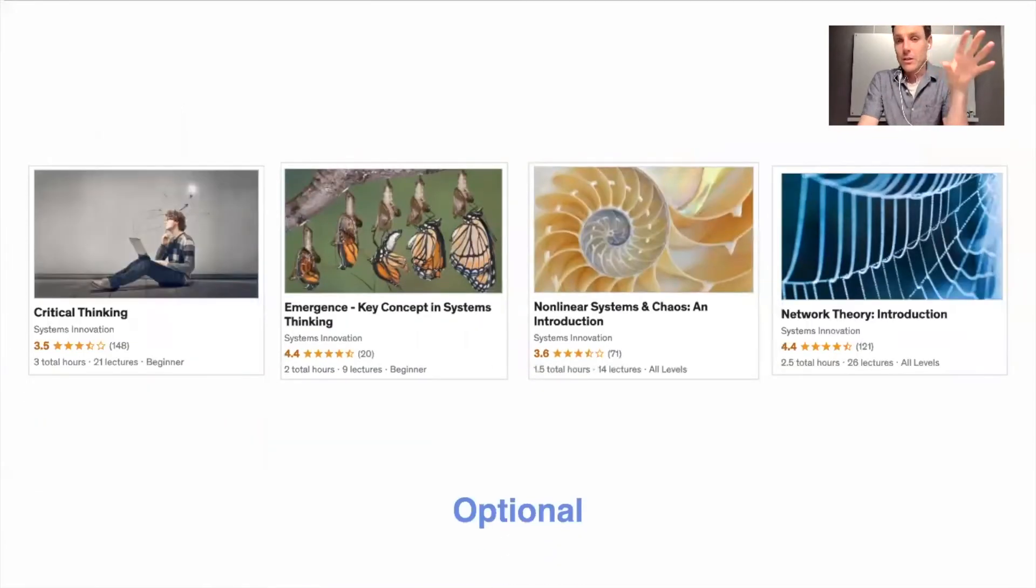So those are the main theoretical ones. These are a bit more specialized in the area of theory. Critical thinking, would recommend that to everyone but maybe it's not your thing. Emergence is a core concept in system thinking, would recommend it if you want to really understand system thinking. If you just want a beginner's understanding and overview, you can skip all of these. Non-linear science and network theory, if you want to understand complex systems and complexity theory, would recommend those. But these ones are optional. The first two you should definitely take. That's on the foundational side, key ideas in systems thinking and complexity theory.